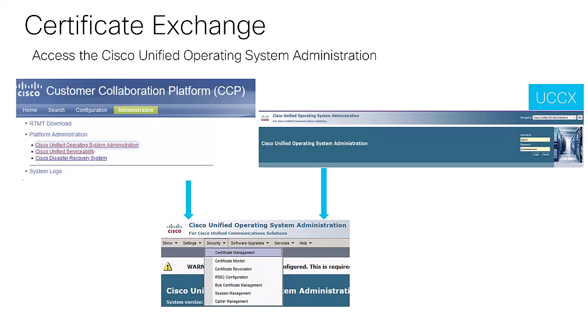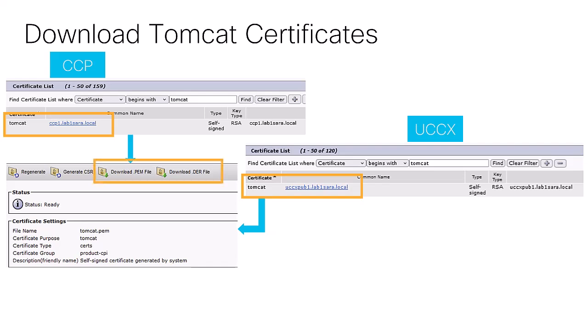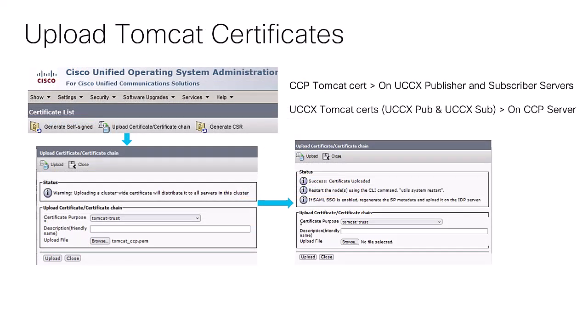Now that you can access, you must proceed with the certificate exchange. Certificate management is handled on the same page for both UCCX and CCP servers — in the Cisco Unified Operating System Administration, or OS Administration, under the security menu. Each server has different certificates, and in this case you are going to focus on the Tomcat certificate. This one must be downloaded from each server, and normally you can identify it by the same common name as the server's FQDN. This is where you exchange certificates.